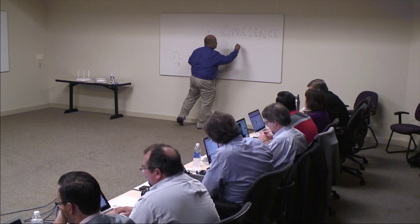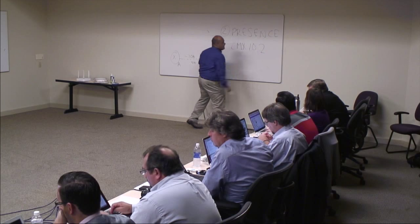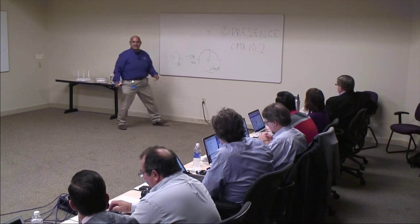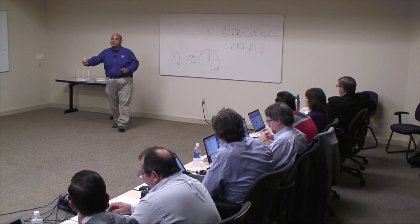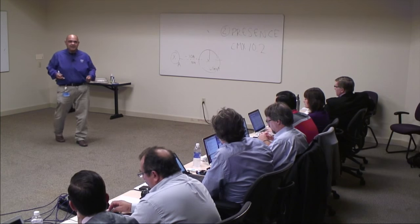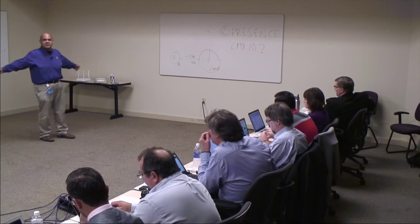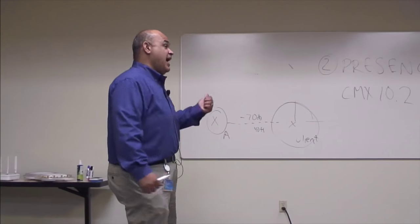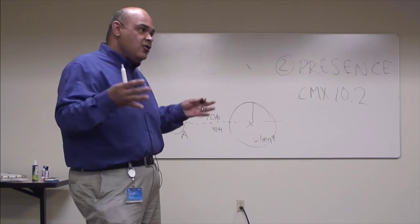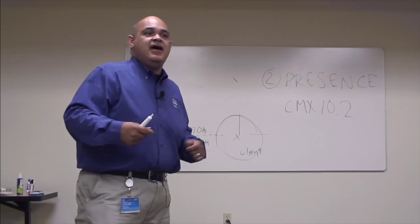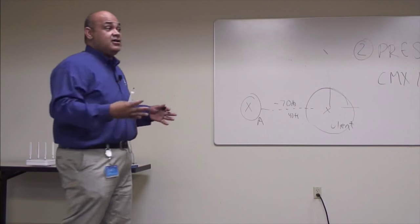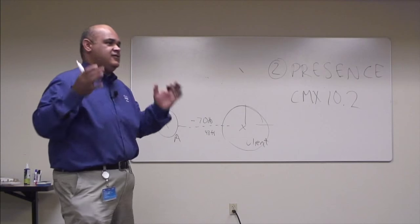CMX 10.2 presence is the idea of peg counting. Anytime a client sends a probe packet, we add a record saying this device was here at this time. We define a device as either a passerby — somebody more than a configured dB strength away — or a visitor — somebody heard at a strong dB, say minus 70, seen for five minutes. A third level says I heard somebody at minus 100 — I'm going to ignore that data. All three categories are configurable in the GUI.